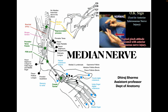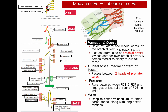Today's topic is the median nerve, also known as the laborer's nerve, which has root values C5, C6, C7, C8, and T1. It is formed from the brachial plexus, which has a lateral cord, medial cord, and posterior cord. A branch from the lateral cord forms the lateral root of the median nerve, and a branch from the medial cord forms the medial root. The median nerve is thus formed by the union of branches from the lateral and medial cords of the brachial plexus.